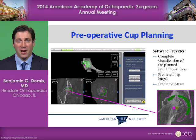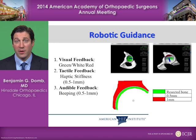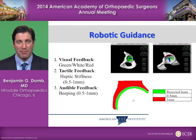Our pre-operative cup planning takes place after we've assessed the femoral version, with complete visualization of the CT scan. We can very accurately place the acetabular component, leading to very precise bony reaming. When we perform the reaming, we have visual feedback: green if we have more bone to take, white if we've taken enough, and red if we've taken too much. There is also tactile feedback from the haptic stiffness.